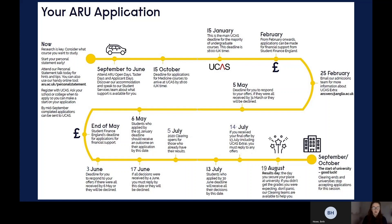The 15th of October deadline is if you are applying for Cambridge, Oxford, or any courses in medicine, dentistry, or veterinary science. For all other undergraduate courses, the main deadline is the 15th of January at 6pm, so this is a date you need to remember and put into your diaries.